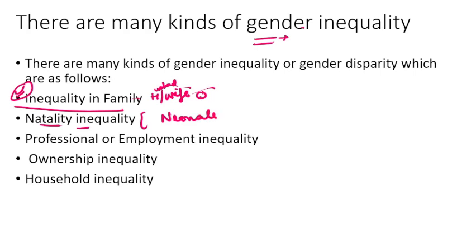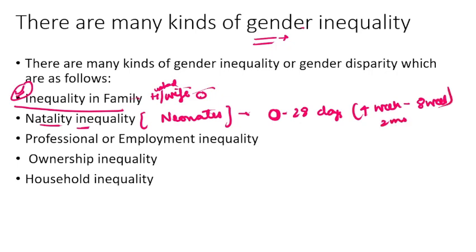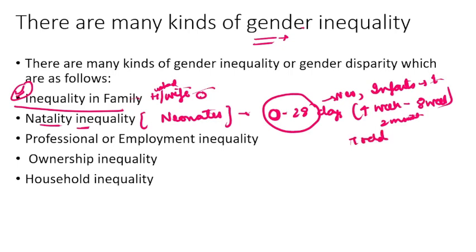Who are neonates? Children from 0 to 28 days — 4 weeks; medically, sometimes considered up to 8 weeks, that is 2 months. Children up to the 1st year are infants, then toddlers from 1 to 3 years, and then preschoolers. That is a little additional information.